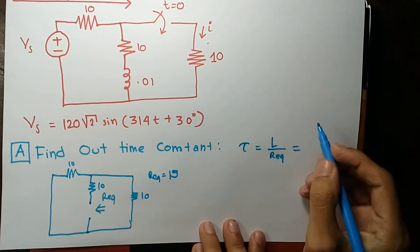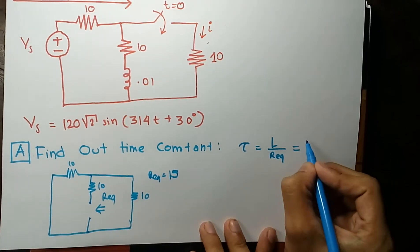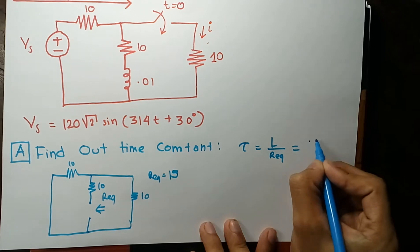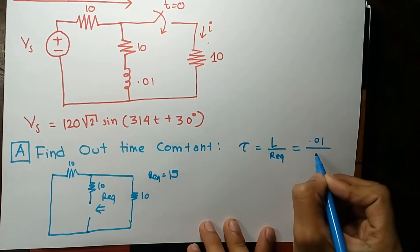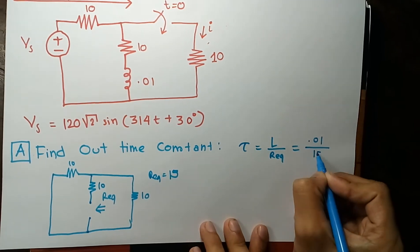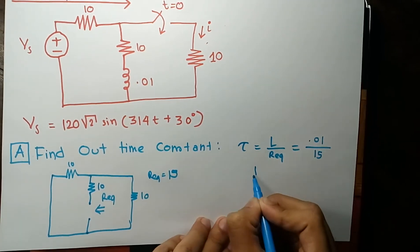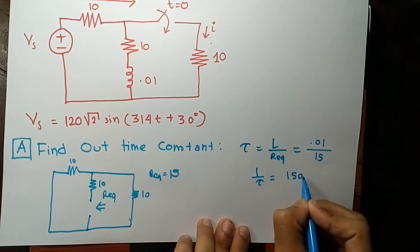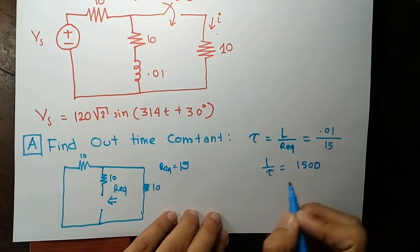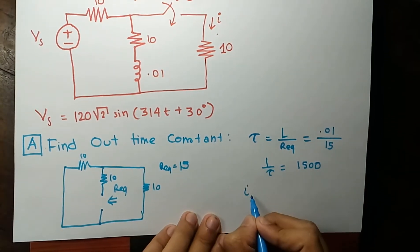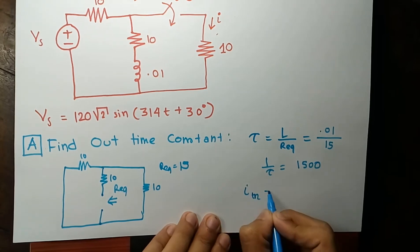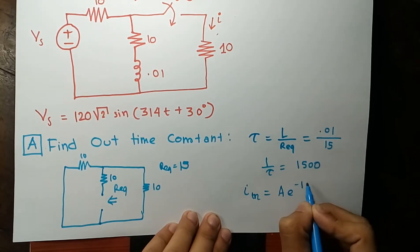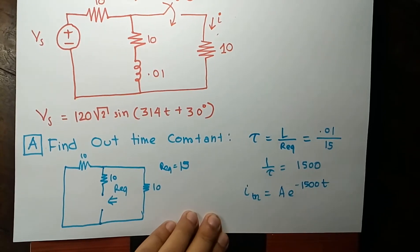So L equals 0.01, and 1 over tau equals 15.00, giving a time constant. The transient solution will therefore be A e to the power negative 1500 t.